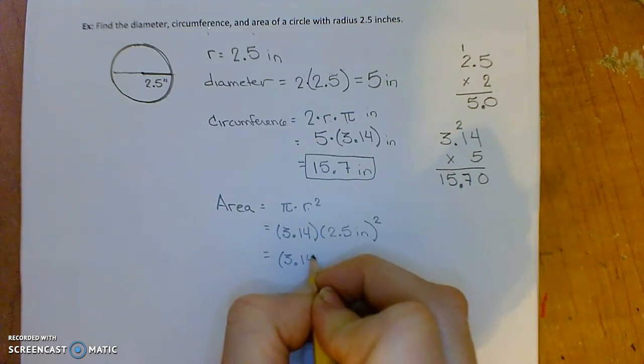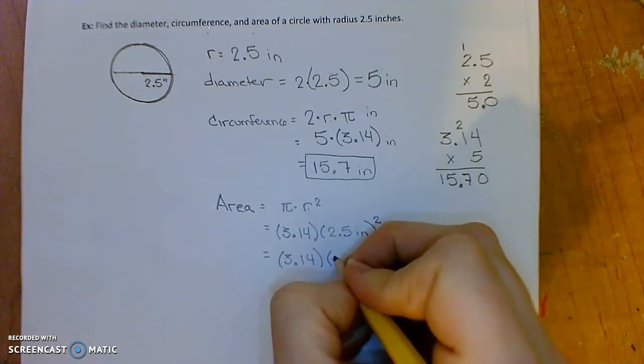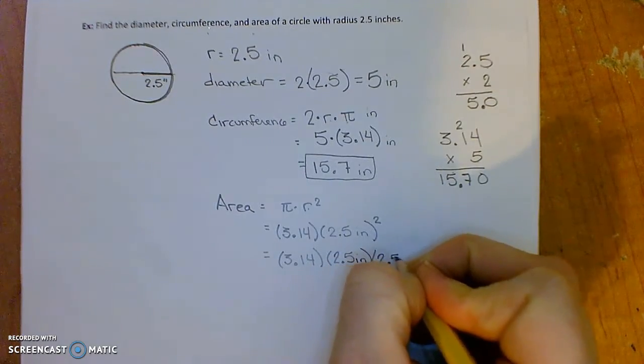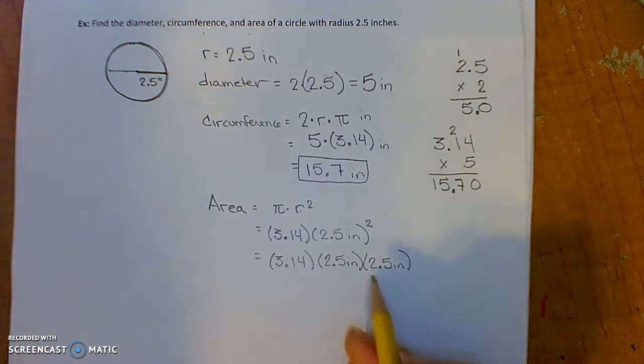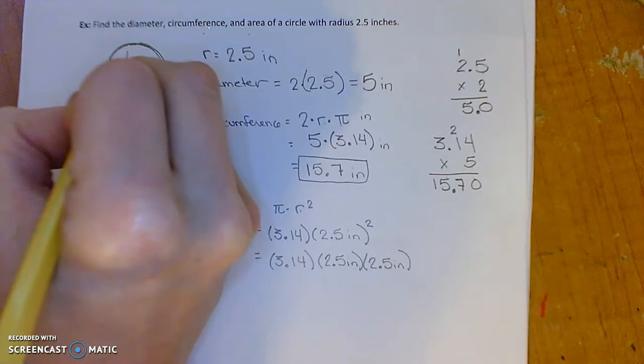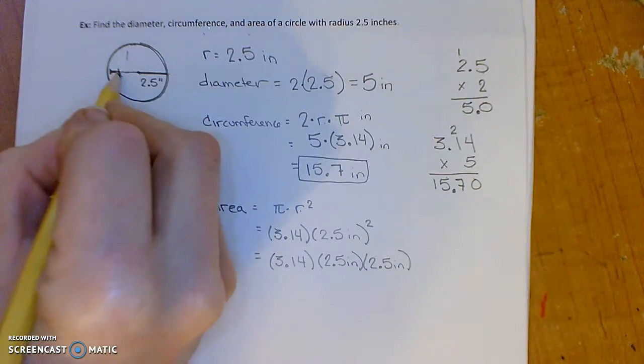So remember what that means. So I've got 3.14 times, and I'm going to write out my units, you don't have to do this every time, 2.5 inches times 2.5 inches. So the units of measurement here, by writing all this out I wanted to sort of explain, when you do inches times inches, what you, the units that you get, an inch is a length, from here to here is one length.